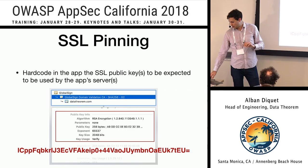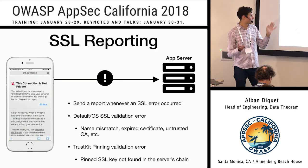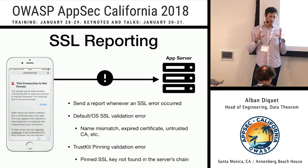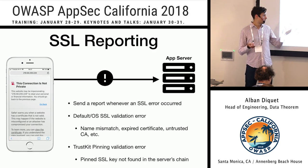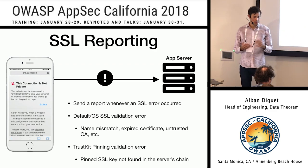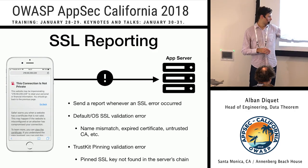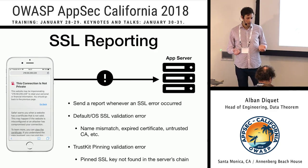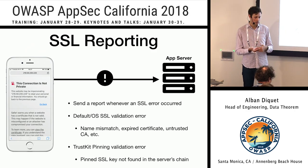The other thing TrustKit does — and this relates to our research — is SSL reporting. If something goes wrong with the TLS connection, the certificate might be wrong because default OS validation failed: it's expired, the name doesn't match, or the CA isn't trusted. Or pinning validation fails — all the default checks passed but the extra pinning step failed. SSL reporting means you send a report letting you know this just happened for one user on their phone somewhere in the world.